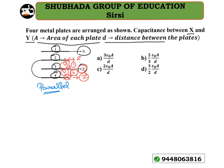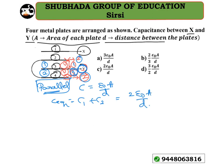So X and Z form the first capacitor, and Y and Z form the second capacitor, because to form a capacitor two plates are required. Capacitor one and capacitor two are connected in parallel. Since the capacitance of a parallel plate capacitor is ε₀A/d, the equivalent capacitance C_eq = C1 + C2 = 2ε₀A/d.